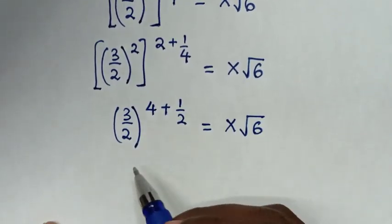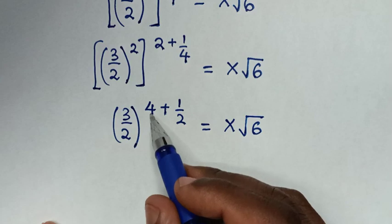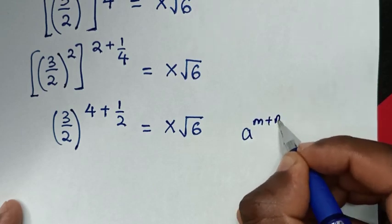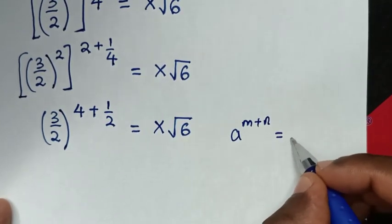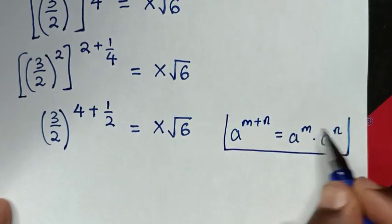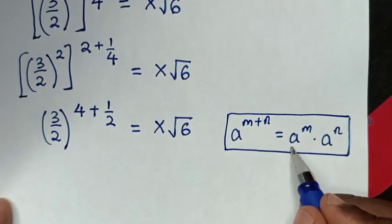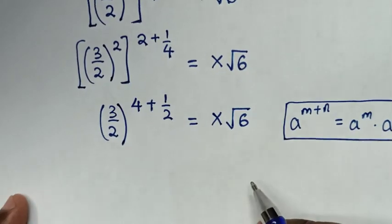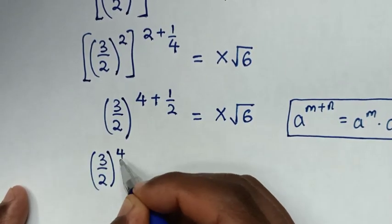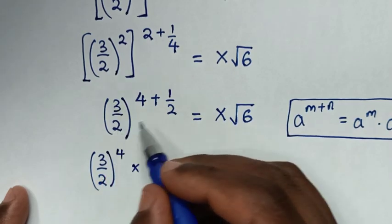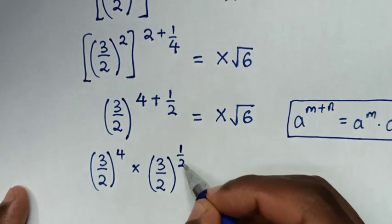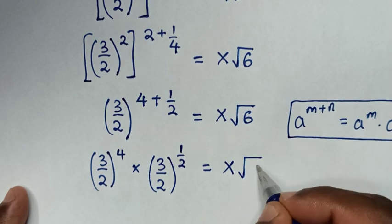Then in the next step, (3 over 2) bracket power of 4 plus 1 half is in the form of a^(m+n), which equals a^m times a^n. So we split the exponent: it becomes (3 over 2) power of 4, times (3 over 2) power of 1 over 2, equal to x square root of 6.